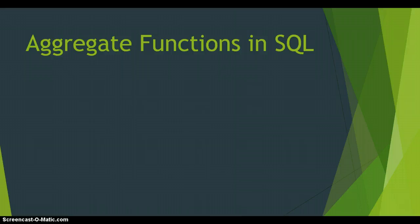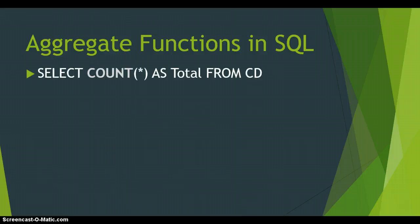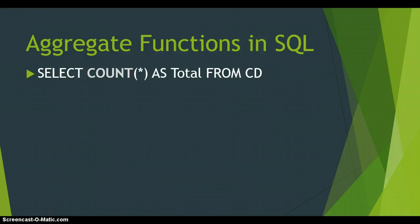We're going to learn about aggregate functions, starting with the COUNT function — the special one among all the functions today. COUNT can be used on any type of field, whether it's a string like text, or a number like a real or currency value. All the other aggregate functions we cover will only work with numbers. When you write SELECT COUNT(*), the asterisk selects all records, and AS renames the output field, from the CD table.